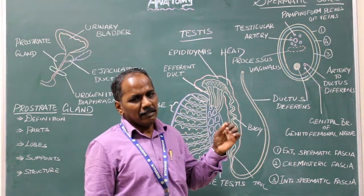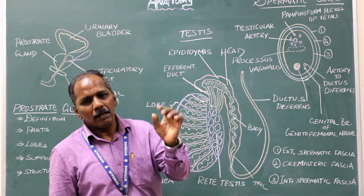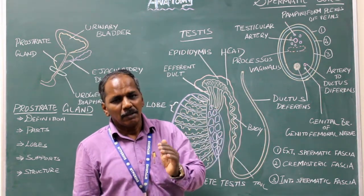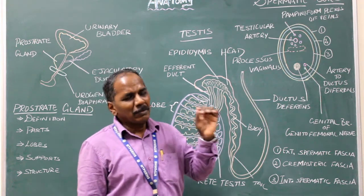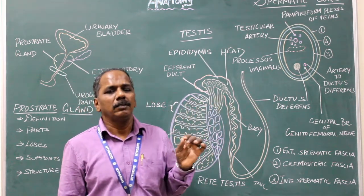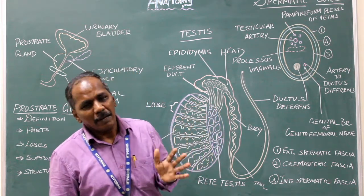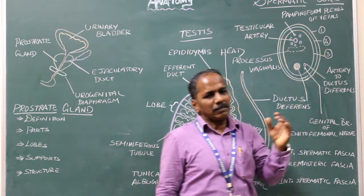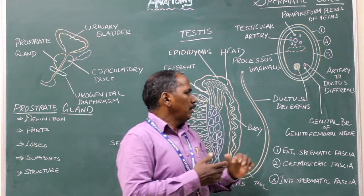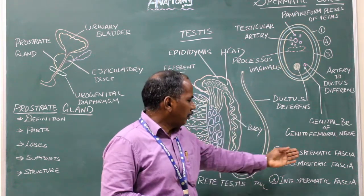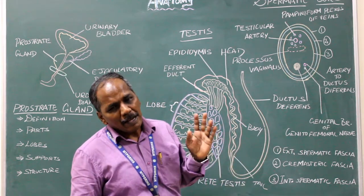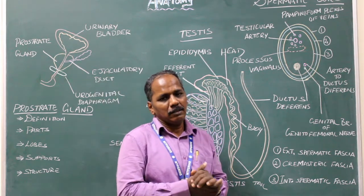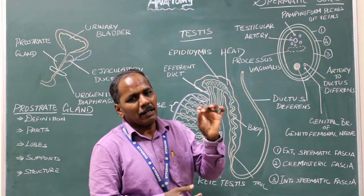Spermatic cord. It is a tubular or cord-like structure that passes to and fro from the testes through the inguinal canal. Layers of the spermatic cord: it consists of three layers, which are the fascia coverings — number one, external spermatic fascia; number two, cremasteric fascia; number three, internal spermatic fascia.